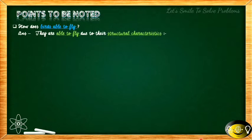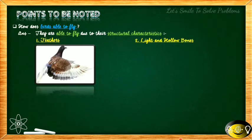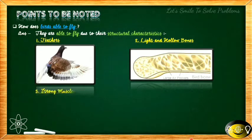The first structural characteristic is their feathers. If we look at a picture of a bird, this portion shows the feathers. The second characteristic is light and hollow bones — just the opposite of human bones. These bones have very large air pockets, which means they are hollow and light in weight. This is the second structural characteristic that enables birds to fly.